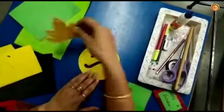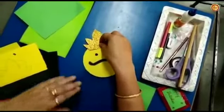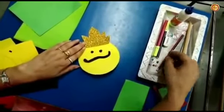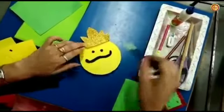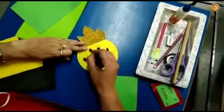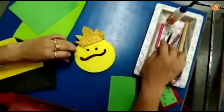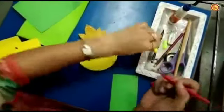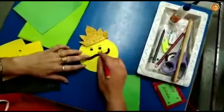Then crown over the head of Ravan. Now draw eyebrows and nose of Ravan from black sketch, and lips from red sketch.